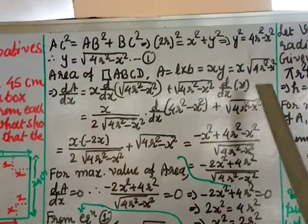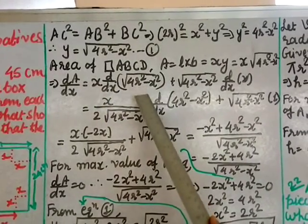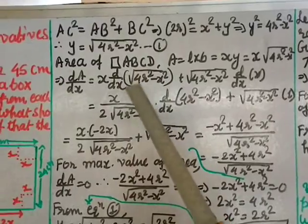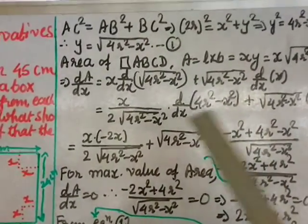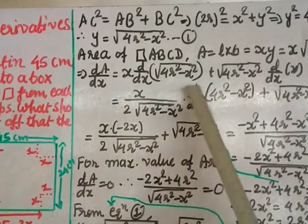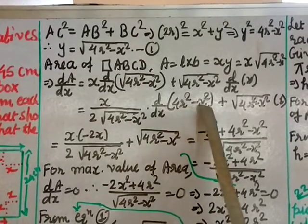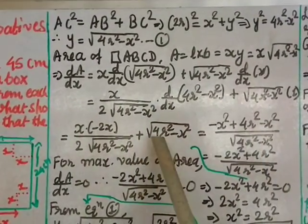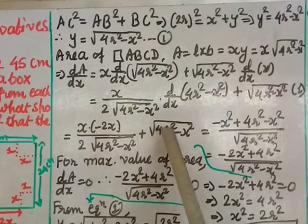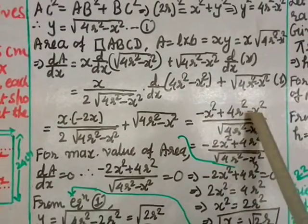Differentiating using the product rule: dA/dx = x times d/dx of sqrt(4r² minus x²) plus sqrt(4r² minus x²) times 1. Applying the chain rule to the square root: d/dx of sqrt(4r² minus x²) = 1/(2 sqrt(4r² minus x²)) times minus 2x. After simplification and taking LCM, dA/dx = (4r² minus 2x²) divided by sqrt(4r² minus x²).